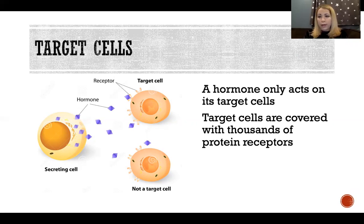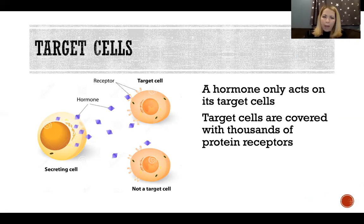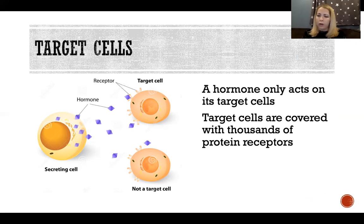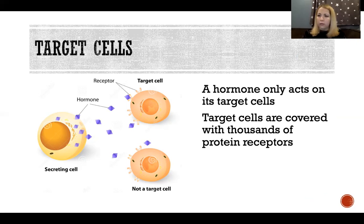We call this the lock-and-key mechanism, because the hormone is the key and it can only open specific locks it is designed for. The lock is the receptor on a cell, and only a specific hormone — a specific key — is able to activate that receptor on a target cell. Any given cell could have receptors for many different hormones, and any given hormone could act on many different types of cells, as long as those cells have the right receptors.